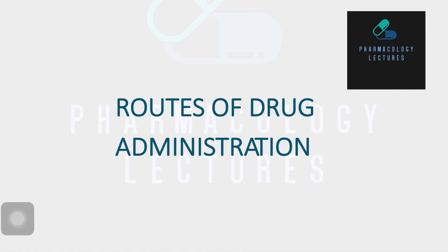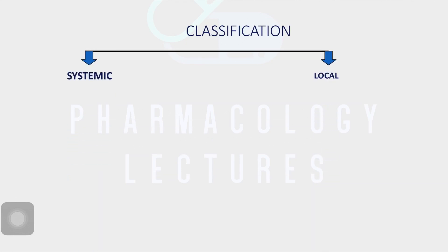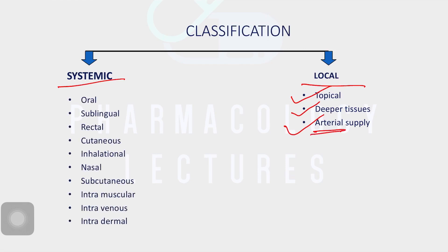This lecture is about routes of drug administration. First, the classification: routes are divided into two major parts — local and systemic. Local routes include topical, deeper tissues, and arterial supply. Systemic routes include oral, sublingual, rectal, cutaneous, inhalational, nasal, subcutaneous, intramuscular, intravenous, and intradermal.